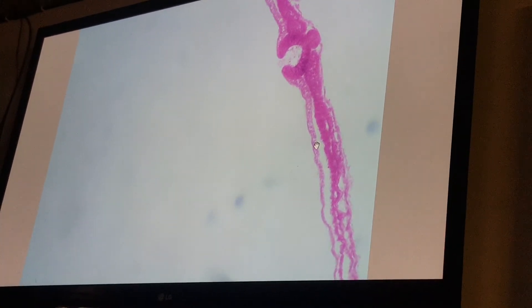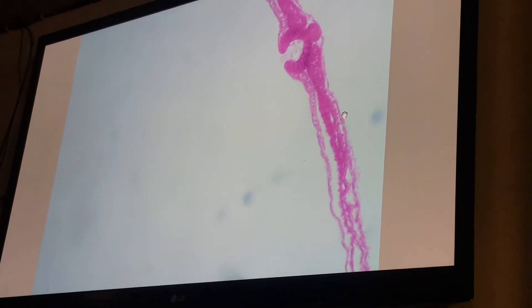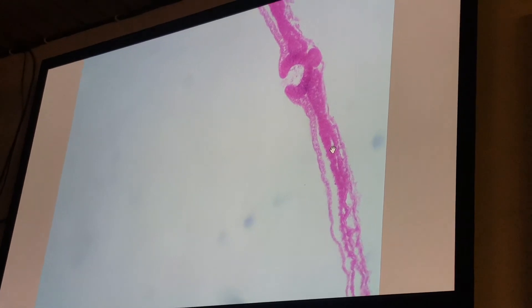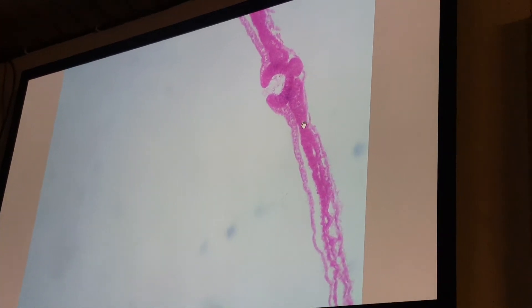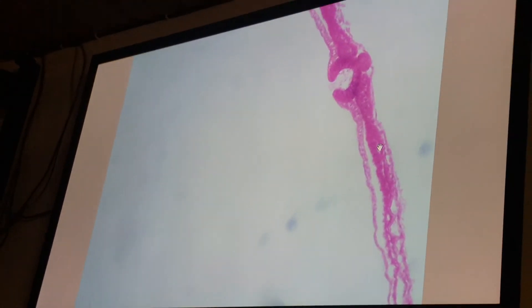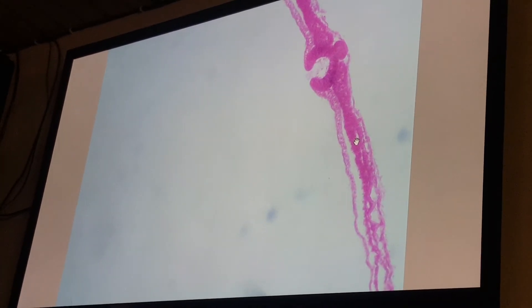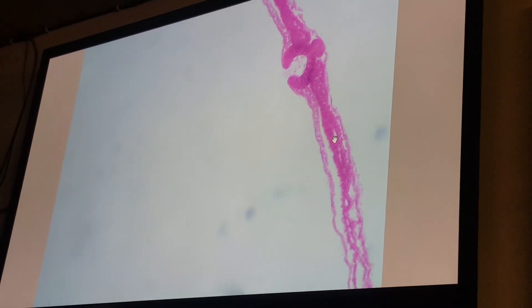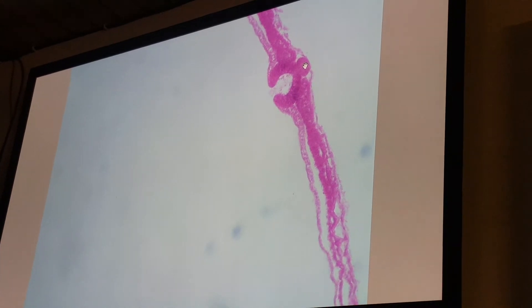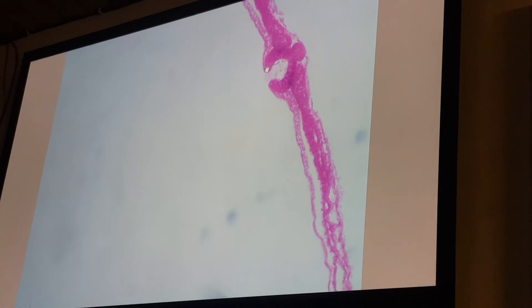Somatic adjacent to the ectoderm, visceral adjacent to the endoderm. The other cavity is intraembryonic cavity. Paraxial mesoderm, intermediate, somite, lateral mesoderm visceral, lateral mesoderm, and intraembryonic cavity. This is ectoderm, endoderm, notochord, neural groove, neural fold.